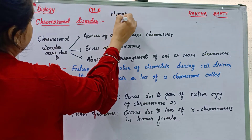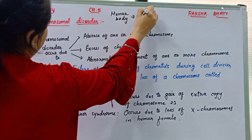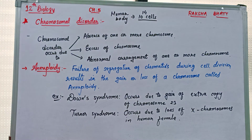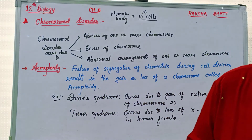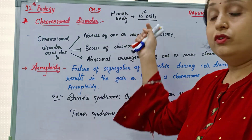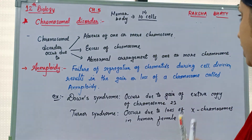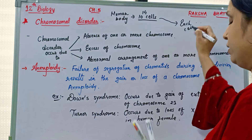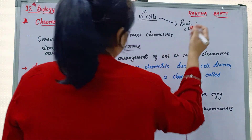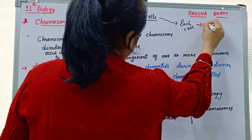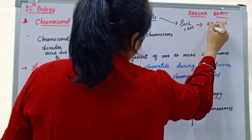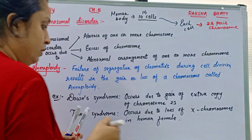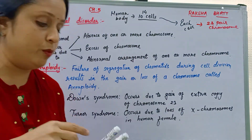The human body is made up of 10 raised to the power 14 cells. Our body is made up of 10^14 cells. Each cell has 23 pairs of chromosomes.